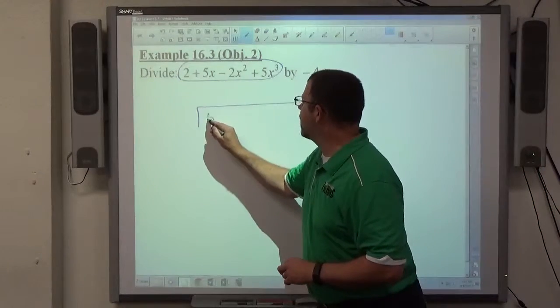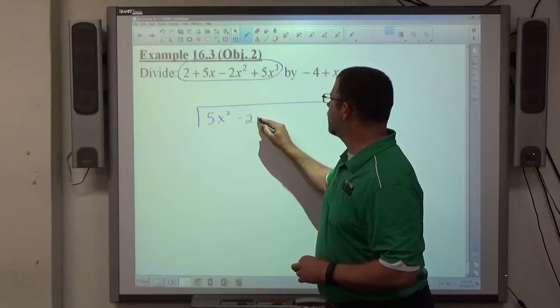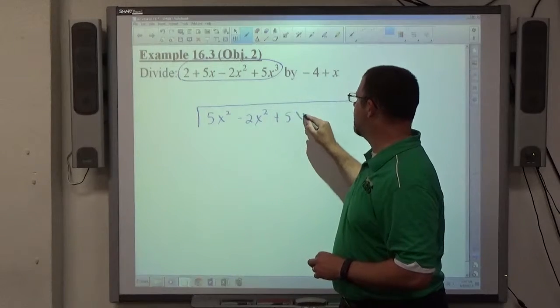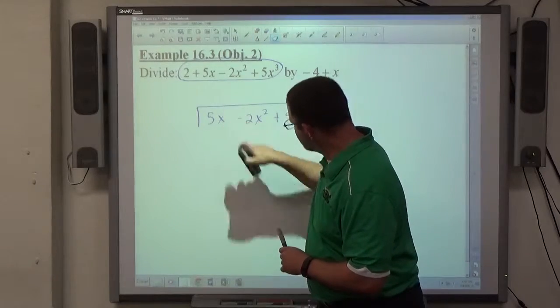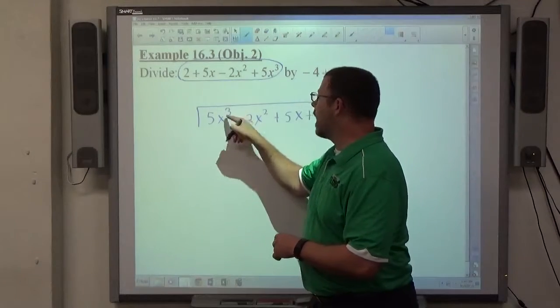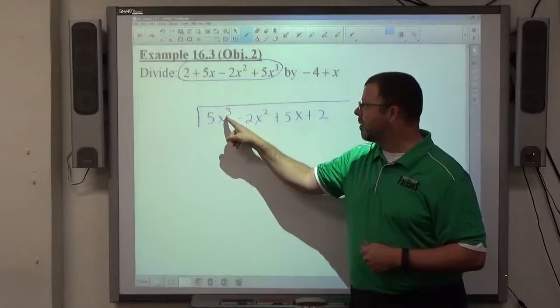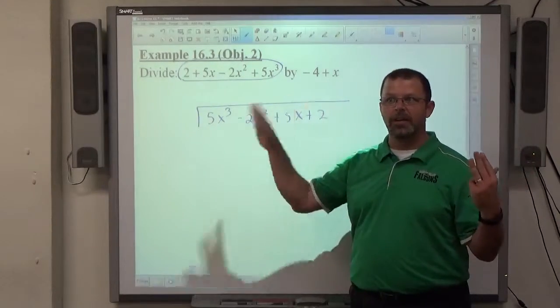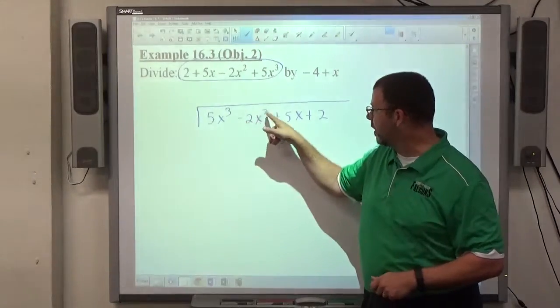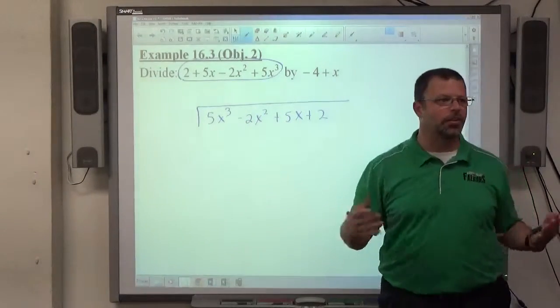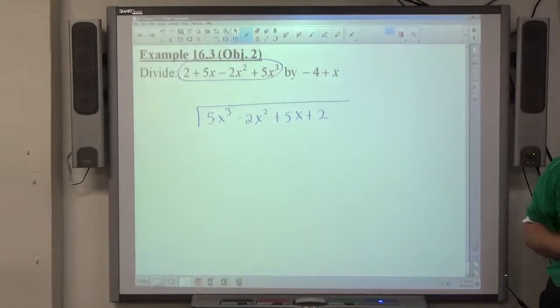And here, we have 5x cubed, we have negative 2x squared, we've got positive 5x, and we've got positive 2. Every power of x, starting with the highest power, has to be accounted for. So the highest power is 3, so 3 has to be there because it's the highest power. No other power bigger than 3 has to be there, but all the powers less have to be. So square, first power, constant, which is x to zero. Every power of x has been accounted for.